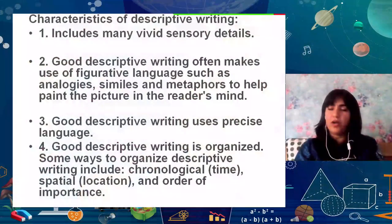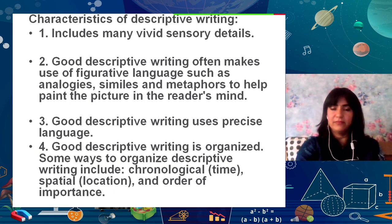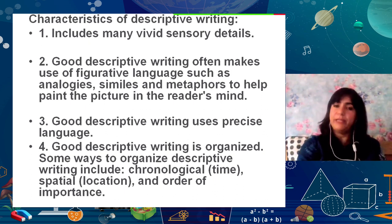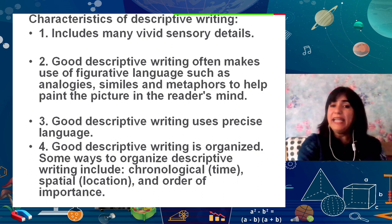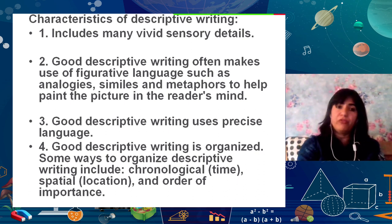Now let's look at the characteristics of descriptive writing. The first is: it includes many vivid sensory details. What this means is that it paints a picture and appeals to all of the senses of the reader — the five senses we've already talked about: sight, hearing, touch, smell, and taste.